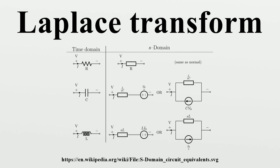The two-sided transform converges absolutely in a strip of the form A < Re(s) < B, possibly including the lines Re(s) = A or Re(s) = B. The subset of values of s for which the Laplace transform converges absolutely is called the region of absolute convergence or the domain of absolute convergence. In the two-sided case, it is sometimes called the strip of absolute convergence. The Laplace transform is analytic in the region of absolute convergence.